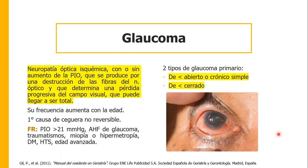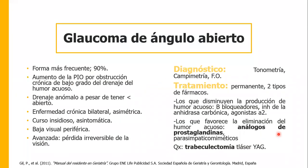Vamos a tener dos tipos de glaucoma primario. El de ángulo abierto, o crónico simple, representa el 90% de los casos. Hay un aumento de la PIO por obstrucción crónica de bajo grado del drenaje del humor acuoso a pesar de tener el ángulo abierto. Es una enfermedad crónica bilateral asimétrica, es decir, se presenta en los dos ojos pero no siempre con la misma intensidad o fecha de inicio. Tiene un curso insidioso, suele ser asintomática.